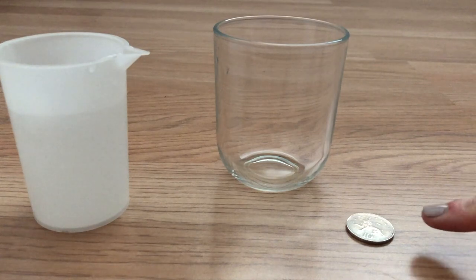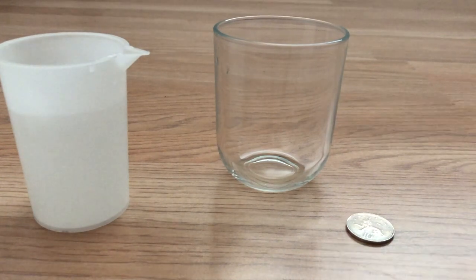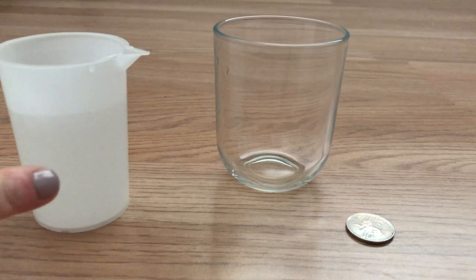So that is a coin, it is a glass beaker, and it is a container with some water in.